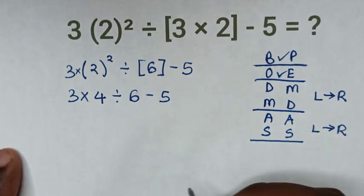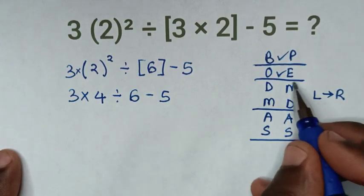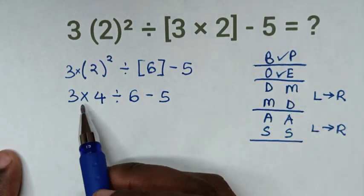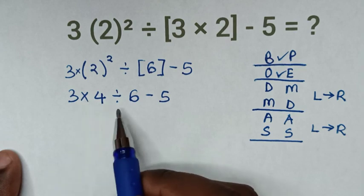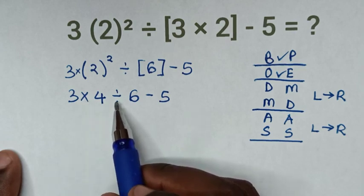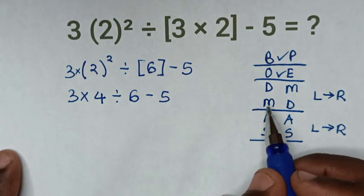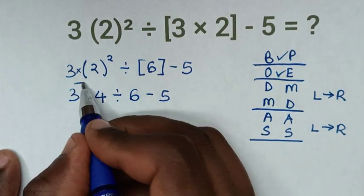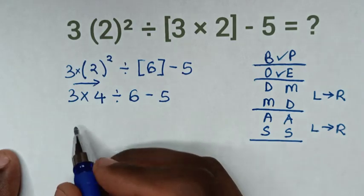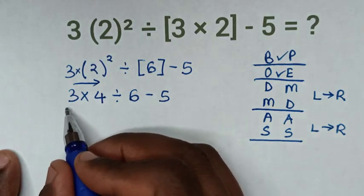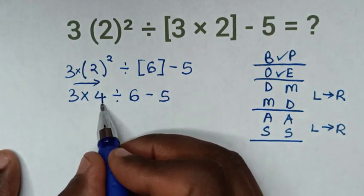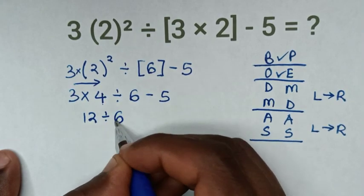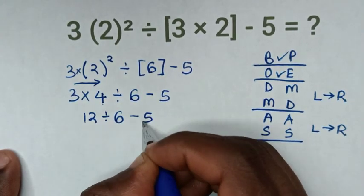Then in the next step, we deal with multiplication and division. In here we have multiplication then division. So from left to right, we start with this multiplication of 3 times 4, which is 12, then divide by 6, then minus 5.